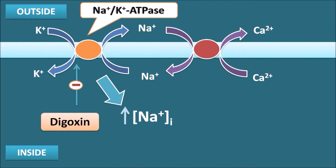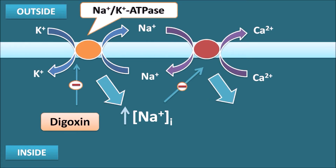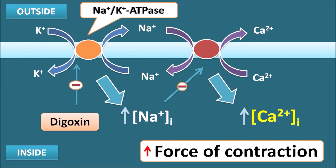As intracellular sodium levels accumulate, this inhibits the sodium-calcium exchange pump, which normally brings sodium into the membrane. Since intracellular sodium is already elevated, sodium cannot re-enter, and this pump is inhibited. When this pump is inhibited, the result is increased intracellular calcium levels. The raised intracellular calcium levels increase the force of contraction of the heart.